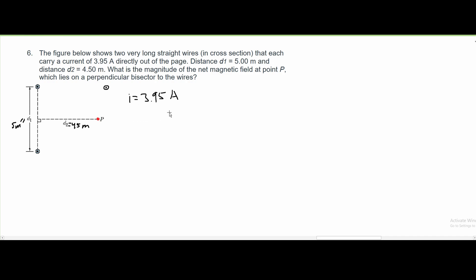We are asked what is the magnitude of the net magnetic field at point P, which lies on a perpendicular bisector to the lines. A bisector is found in the middle of two lines; it bisects both of them.